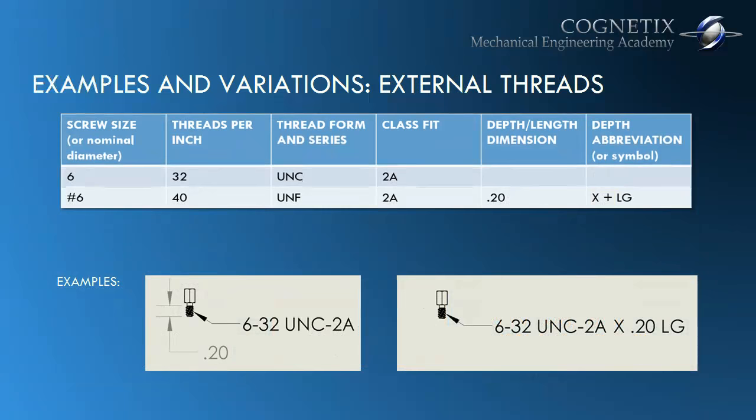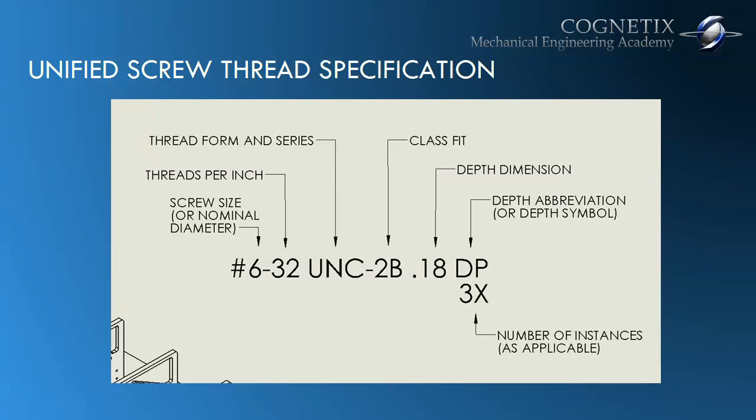To be thorough, here are a couple of examples and variations of external thread call-outs. The one on the left is a number 6-32 thread, Unified Coarse, with a class fit of 2A because it is an external thread. The thread on the right side is pretty much the same thing but expressed a little differently — it's a number 6-32 UNC 2A thread by 0.20 in length. So we're done with the majority of the thread specification. What we have left now is how to express the number of instances of a thread.